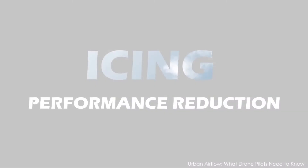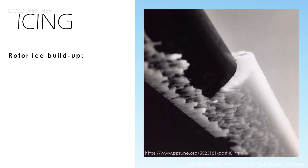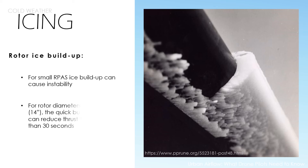RPAS users must also watch for icing conditions. In addition to operational hazards due to the complex airflow within the urban environment, for cold conditions, instabilities caused by ice accretion impact the performance of rotor blades, potentially making it impossible for the RPAS to fly. For rotor diameters under 350 mm, the quick buildup of ice can reduce thrust by 50% in less than 30 seconds.